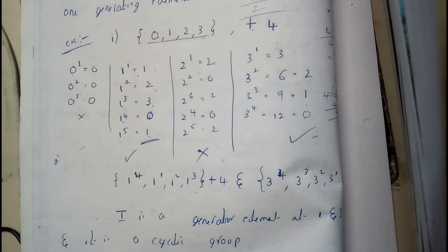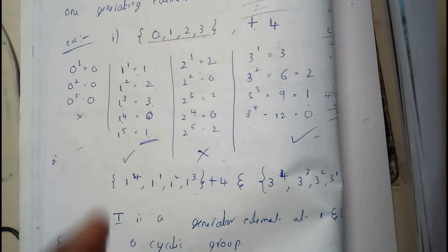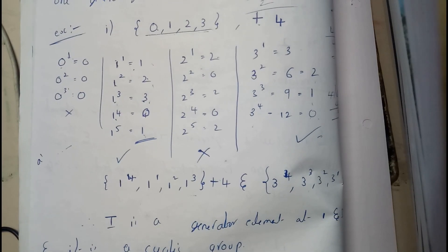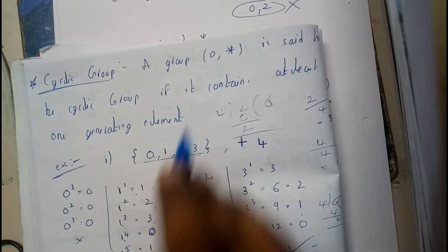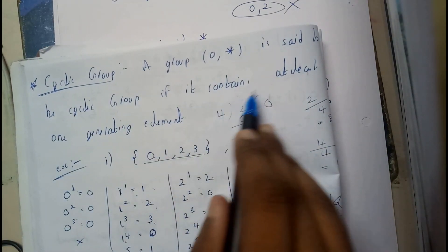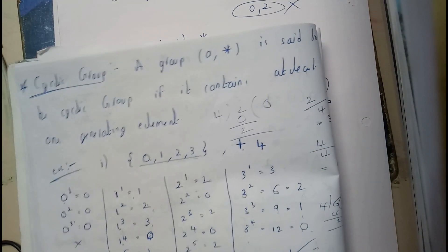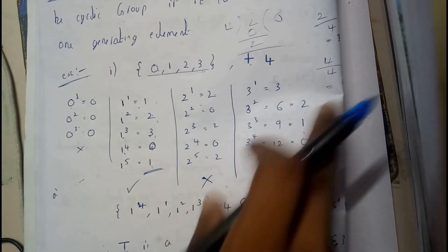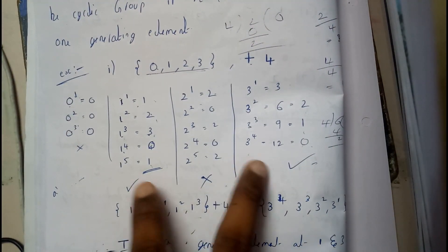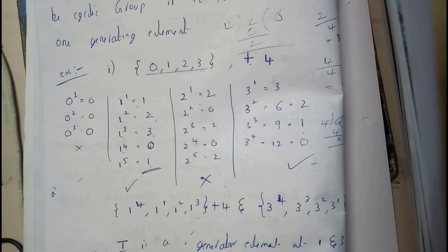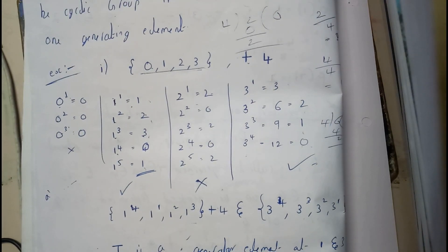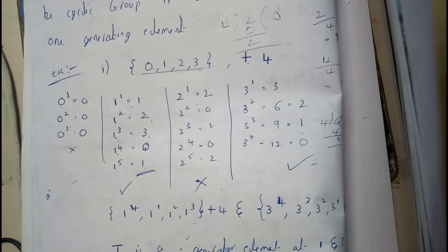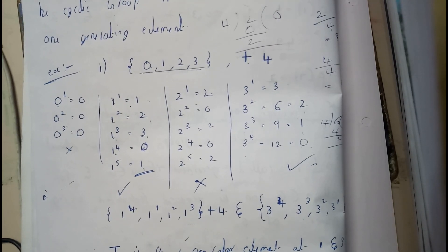So these two — 1 and 3 — are the generating elements. Once you know about generating elements, you can go deeper into cyclic groups. A group (G, *) is said to be cyclic if it contains at least one generating element. Since this group has two generating elements, it is a cyclic group. That's all about cyclic groups and generating elements.